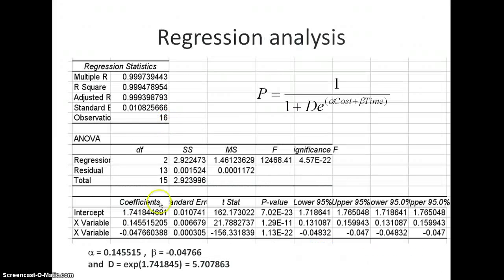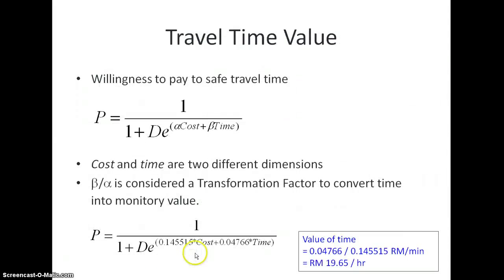Looking at the results, alpha becomes 1.45 and beta is negative 0.049 (following the sign convention). Cost and time are two different parameters or dimensions — just like volume and meters, you cannot simply add them up.